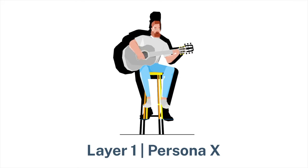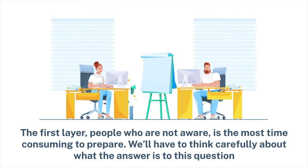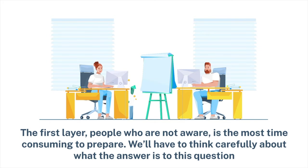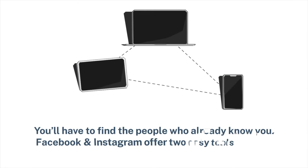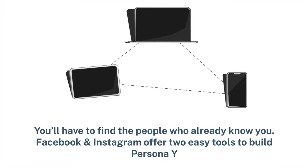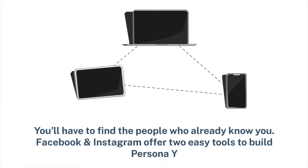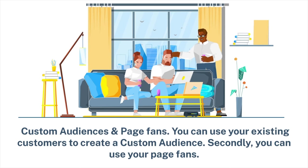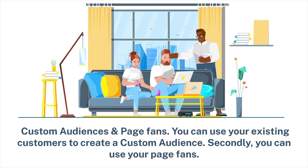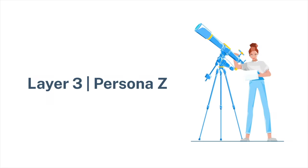Layer 1, Persona X: The first layer, people who are not aware, is the most time-consuming to prepare. We will have to think carefully about what the answer is to this question. Layer 2, Persona Y: You will have to find the people who already know you. Facebook and Instagram offer two easy tools to build Persona Y — custom audiences and page fans. You can use your existing customers to create a custom audience, and secondly, you can use your page fans.